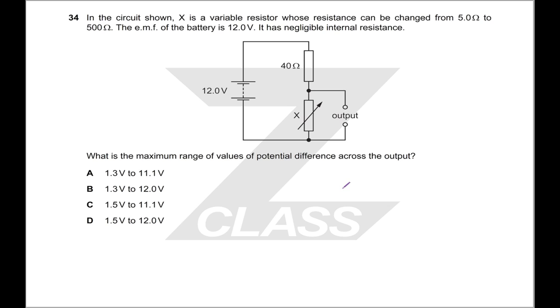Which graph shows the current voltage characteristic of a filament lamp? That is just something that you need to know. In the circuit shown, X is a variable resistor whose resistance can be changed from 5 to 500. Quite an impressive range. The EMF of the battery is 12 volts. It has negligible internal resistance. What is the maximum range of values of potential difference across the output? So essentially all you want to do here is this is a potential divider circuit. You're going to get the same fraction of 12 volts as you have fraction of the total resistance. So just put in the minimum and maximum values and get out the answers. You have 5 over 5 plus 40 and 500 over 500 plus 40 times your 12 volts. That gives you your output voltage and that gives you the answers.